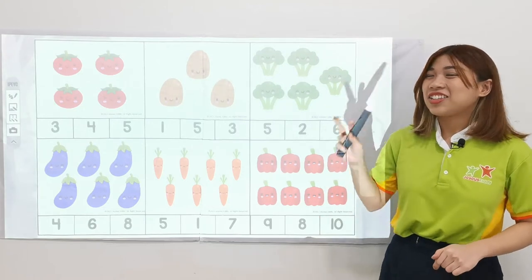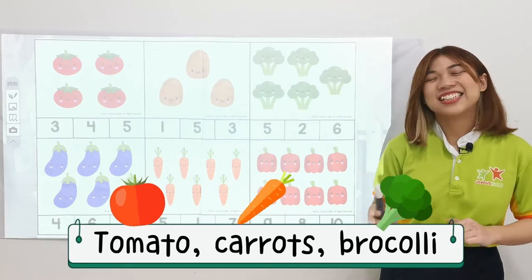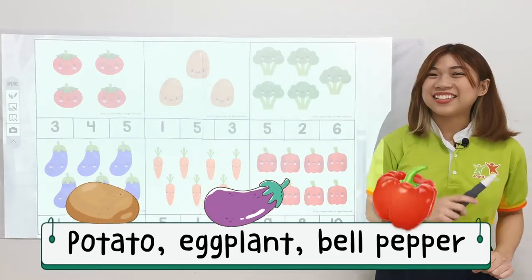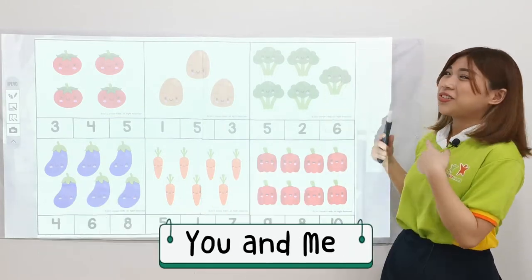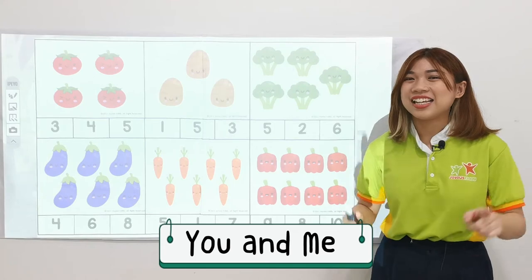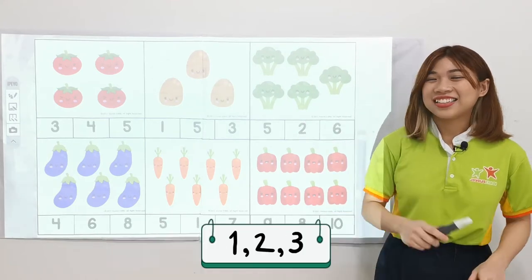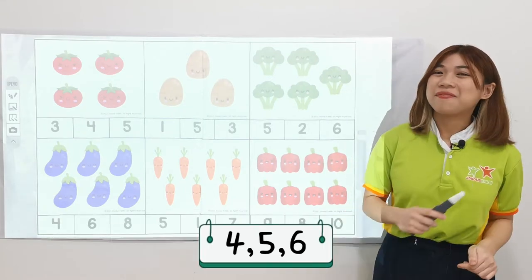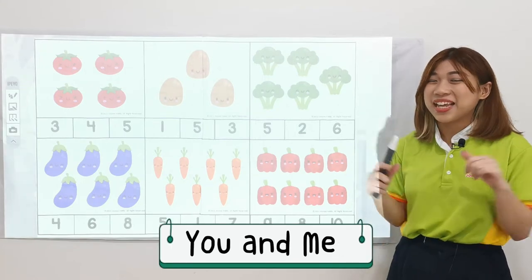1, 2, 3. Tomatoes, carrots, broccoli. Tomatoes, carrots, broccoli. Potatoes and bell pepper. Potatoes and bell pepper. Some vegetables for you and me. And we count 1, 2, 3. 1, 2, 3. Then we say 4, 5, 6. 4, 5, 6. Some vegetables for you and me.